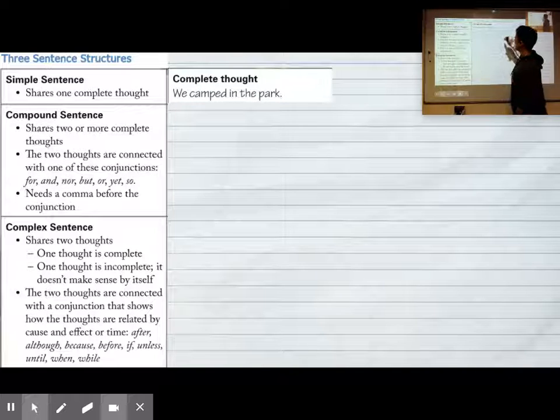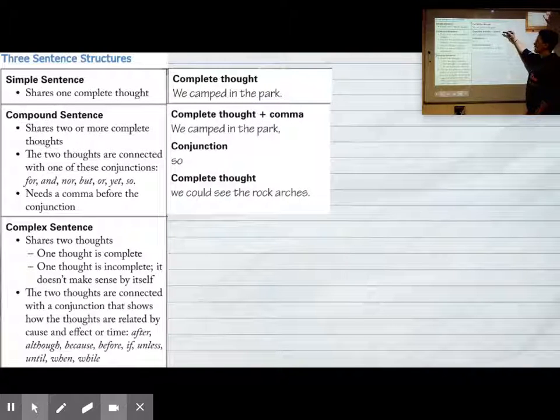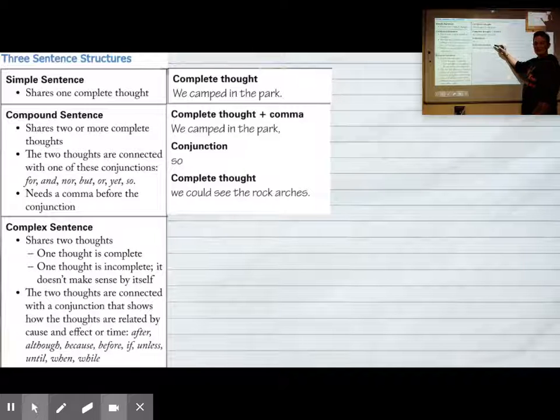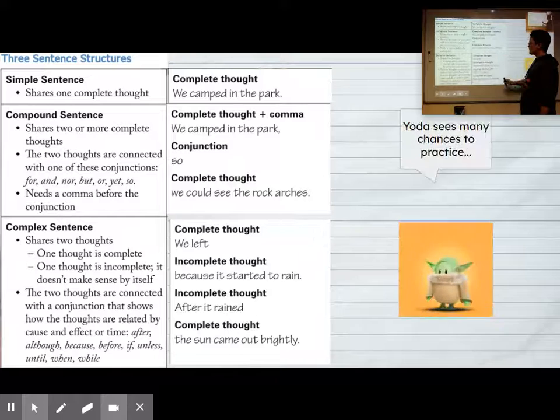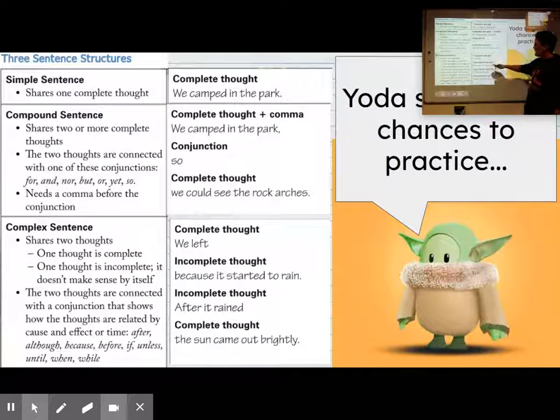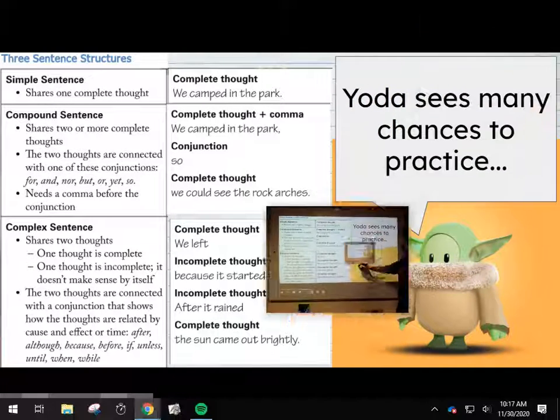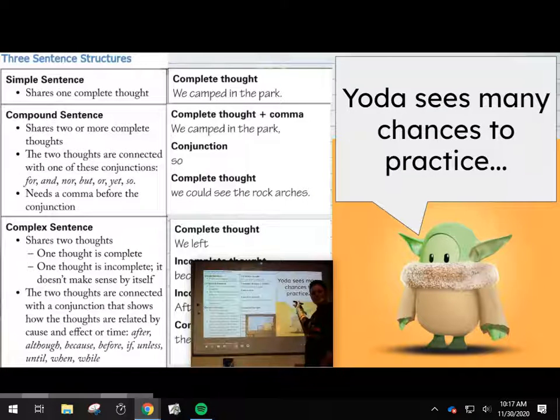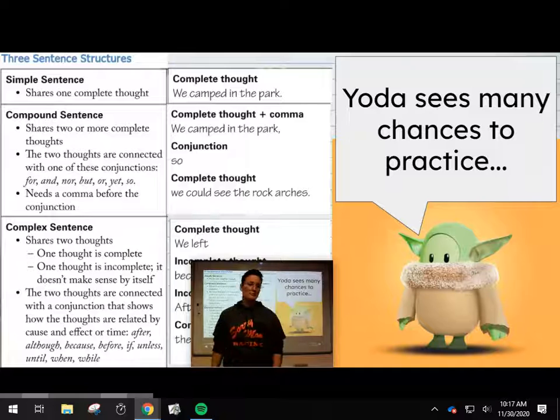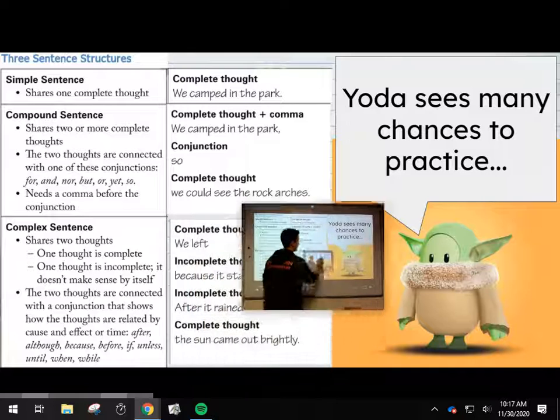So we have a complete thought, a complete thought with a comma, conjunction, and another complete thought to make a compound sentence, and then we have the complex, which is a complete thought with an incomplete thought. And then my friend Baby Yoda showed up and he says, Yoda sees many chances to practice. I think he's telling your future.